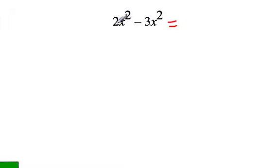So if we're going to subtract 3x squared from 2x squared, remember that we subtract the coefficients and keep the exponent and the variable the same.